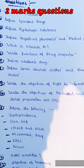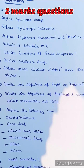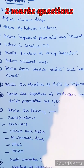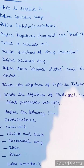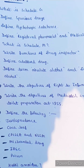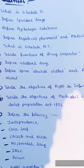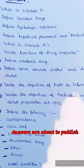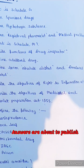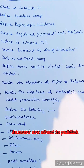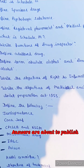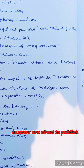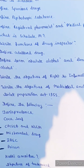Define registered pharmacist and medical practitioners. What is Schedule M? Write functions of drug inspector. Define adulterated drugs. Define the terms absolute alcohol and denatured alcohol. Read the objectives of the Right to Information Act.